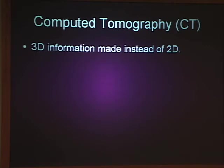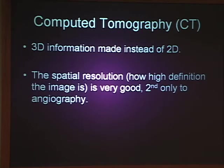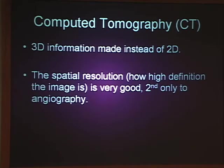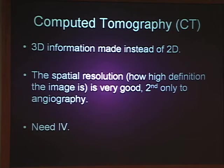The nice thing about CT compared to x-ray is you get 3D information, and the spatial resolution is very good — above the 720p range, second only to angiography. You do need an IV, which isn't fun for babies, and the contrast is required because the exam is largely worthless without it. This is an example of the raw data: looking from the top of the head down at blood vessels. On one side there are three vessels when there should only be one — this is the normal side versus the abnormal side.